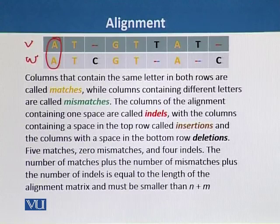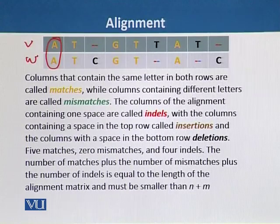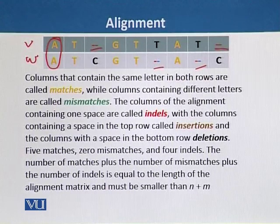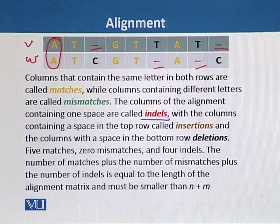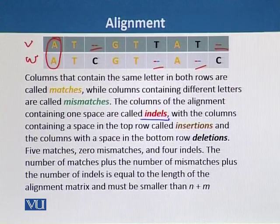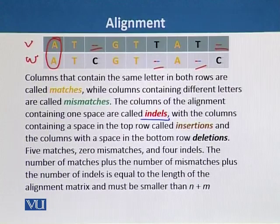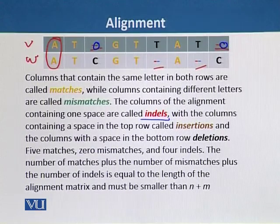In these two strings there is no mismatch. Columns of the alignment containing one space are called indels. Indel means insertion and deletion — IN stands for insertion and DELS stands for deletions, so we combinedly write it as indels. Columns containing a space in the top row are called insertions, and spaces in the bottom row are called deletions.